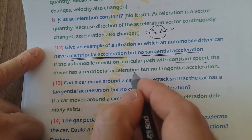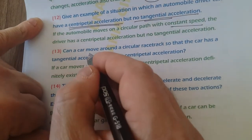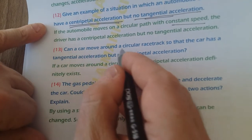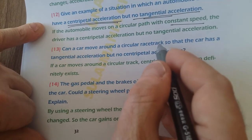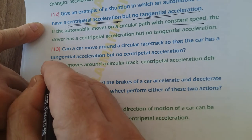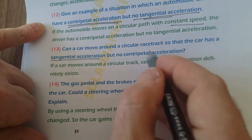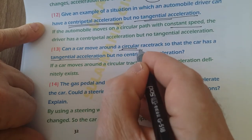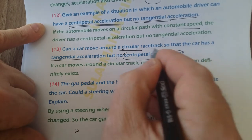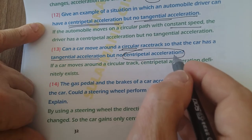Question number thirteen: can a car move around a circular race track so that the car has tangential acceleration but no centripetal acceleration? On a circular track, this is impossible — there will always exist centripetal acceleration. This is not possible.